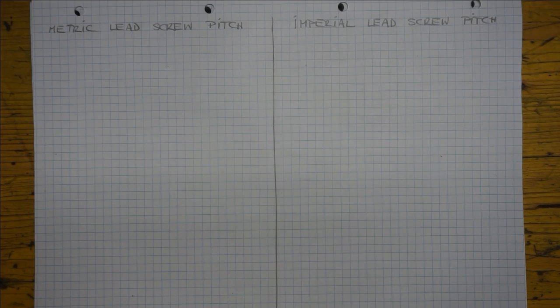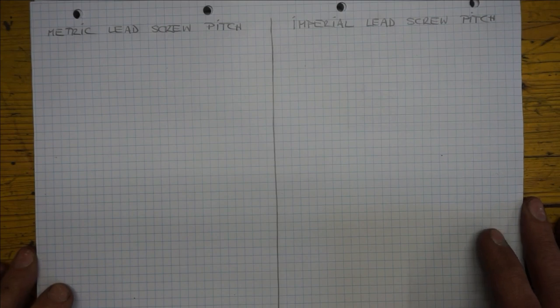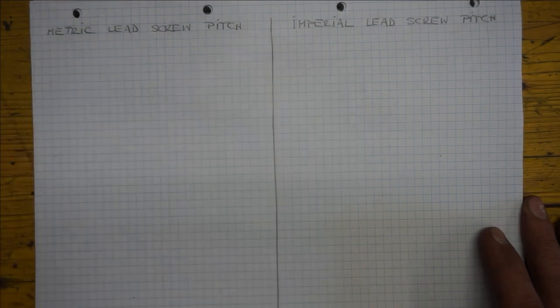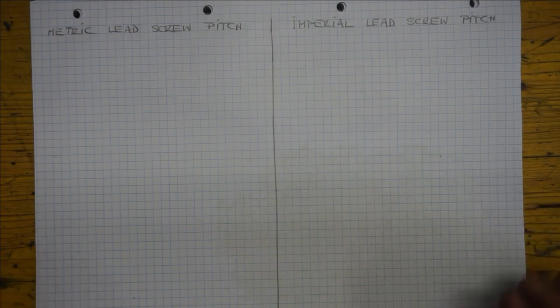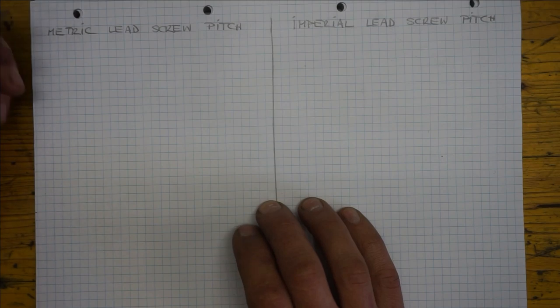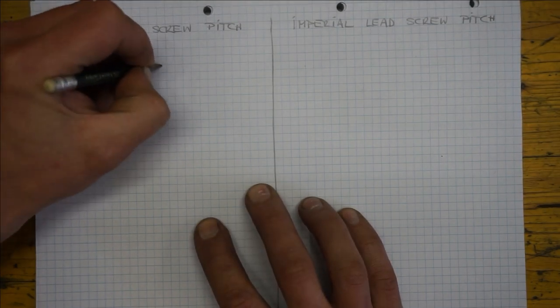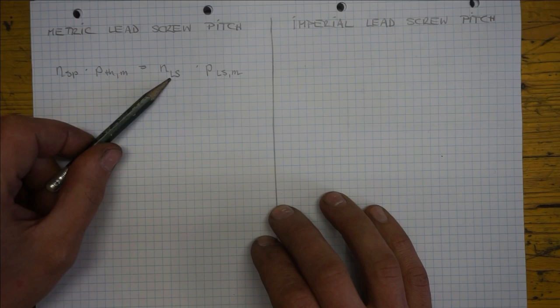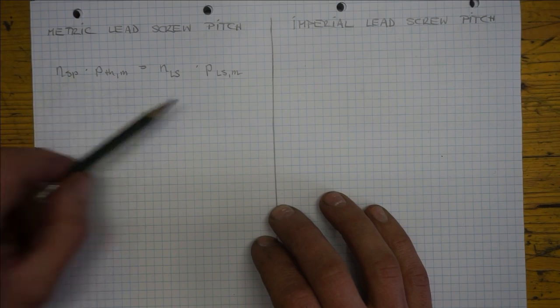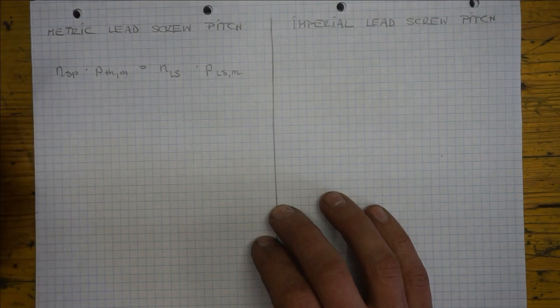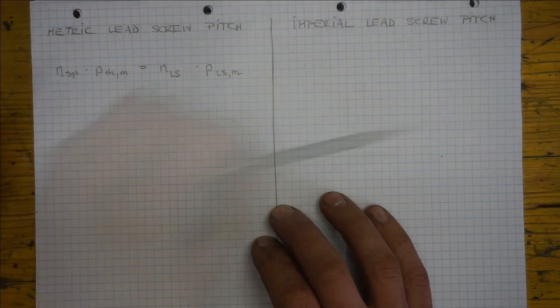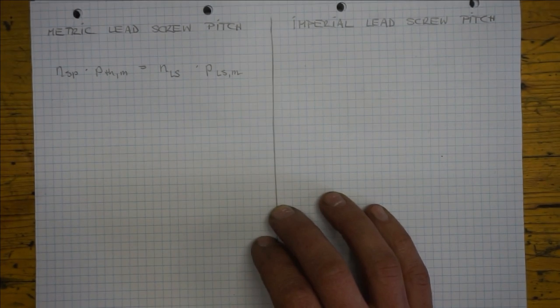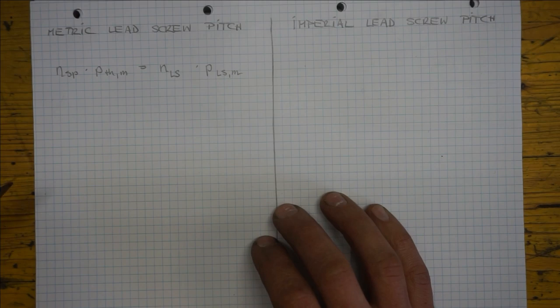Next let's take a look at the theory behind this. To the left we'll consider lathes with metric lead screw while to the right we'll consider their imperial counterparts. Now basically we need a very important equation here. And in this equation NSP and NLS are spindle and lead screw revolution numbers respectively, while PTH and PLS are thread pitch and lead screw pitch respectively, metric pitches that is.